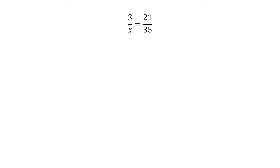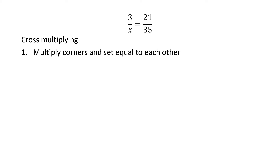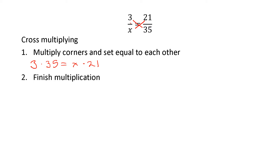Here are our two ratios, our proportion: three over x equals 21 over 35. The technique we use to solve this is called cross multiplying. Cross multiplying is a three-step process. First, multiply our corners and set them equal to each other — just like we did when checking if two ratios were a proportion. So we multiply three times 35 and x times 21, and set them equal. Next, finish the multiplication: three times 35 gives us 105, equals x times 21.